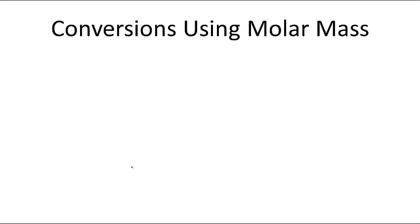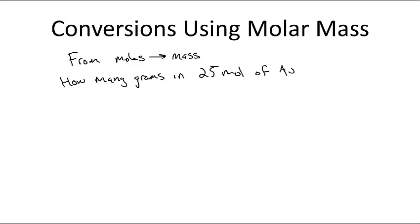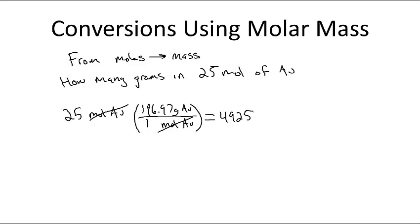So conversions using molar mass, from moles to mass. How many grams in 25 moles of Au? We start with 25 moles of Au, and I know the unit I want to cancel out is moles of Au so I put that on the bottom and I know that one mole is 196.97 grams of Au. So that can cross out and my answer is 25 times 196.97 which is 4925 grams of Au.